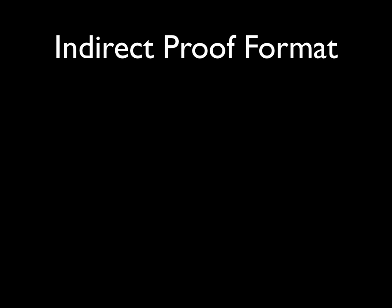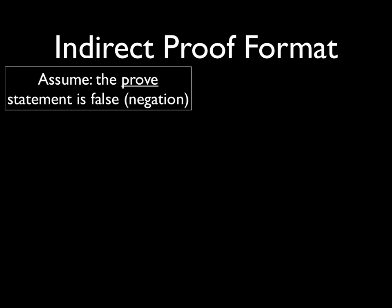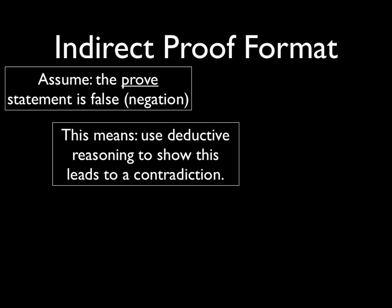The format for these indirect proofs follows four steps. The first step is when we make an assumption — we assume that the prove statement is false, so that's the negation step. Next, we use deductive logic to show that this assumption somehow leads to a contradiction, either contradicting given information or some established fact.